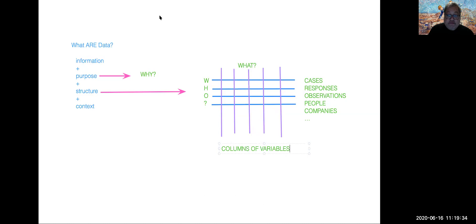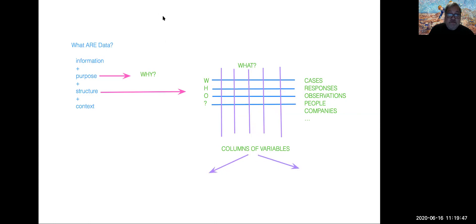There are two kinds of variables, two kinds of columns. One kind is called categorical, and the other kind is called quantitative. Categorical types of variables describe kinds or types of information, whereas quantitative data describes amounts.